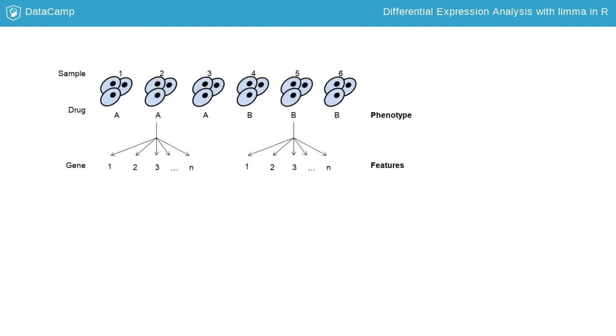Each sample is processed by a high-throughput assay to measure thousands of genes. These are the features. In this course, the features will always be genes, but in other experiments they could be proteins or some other molecular feature of a cell.